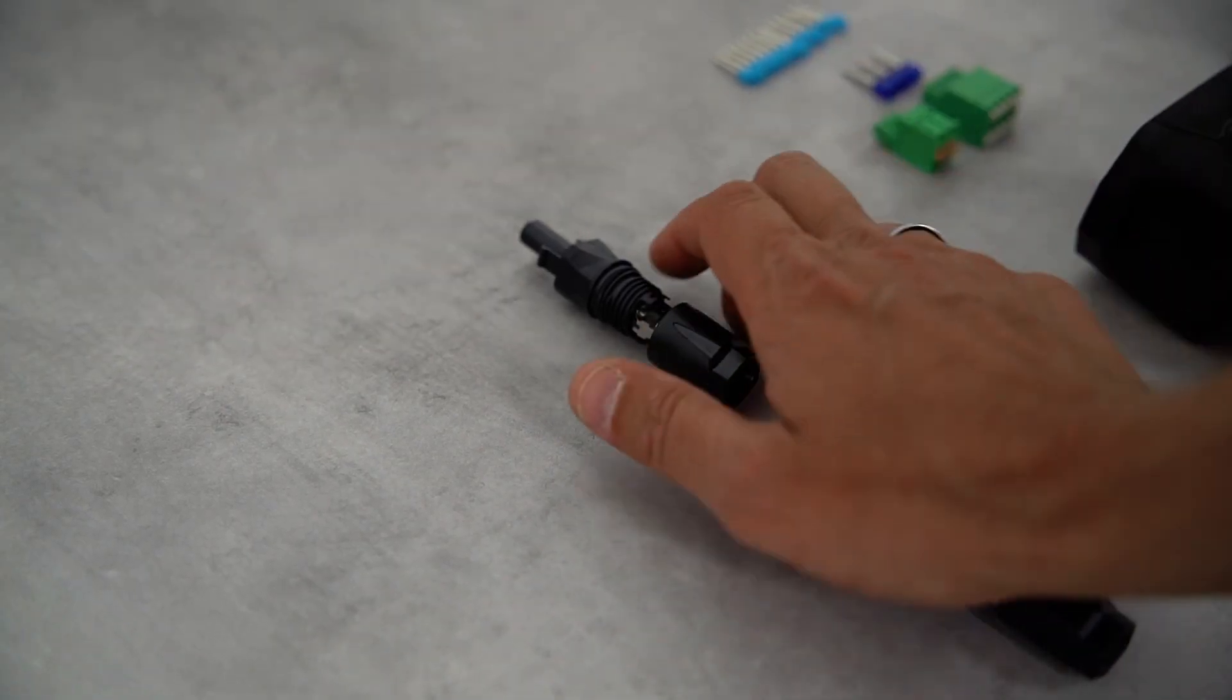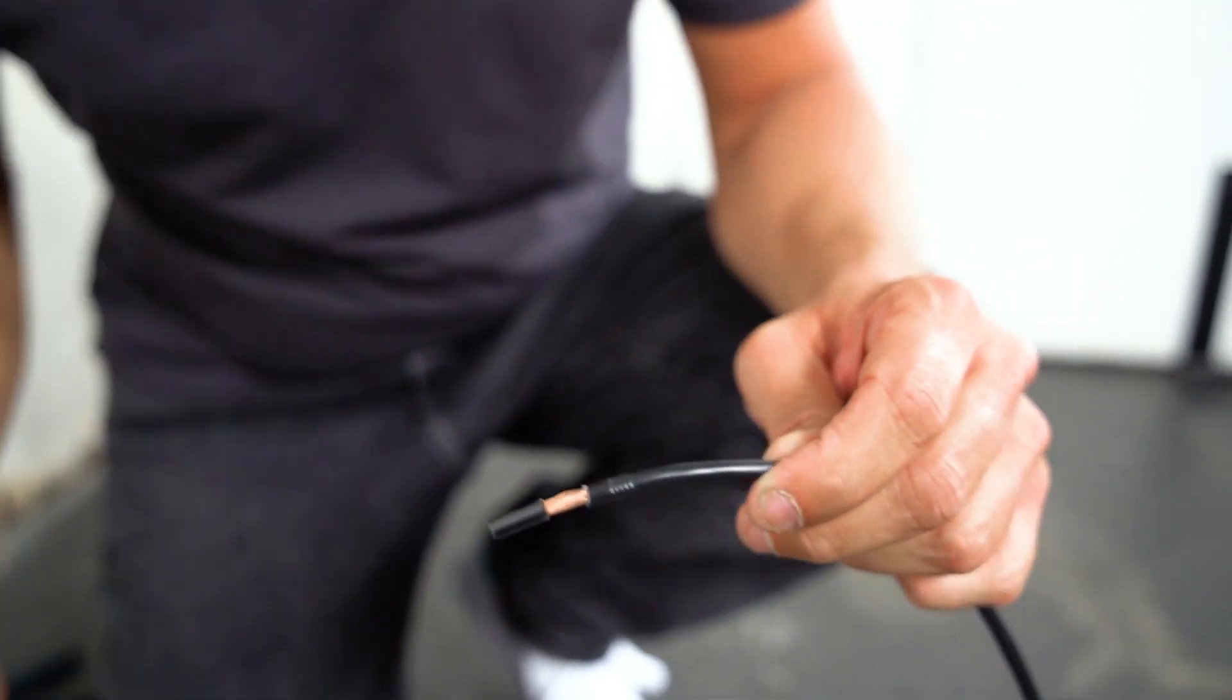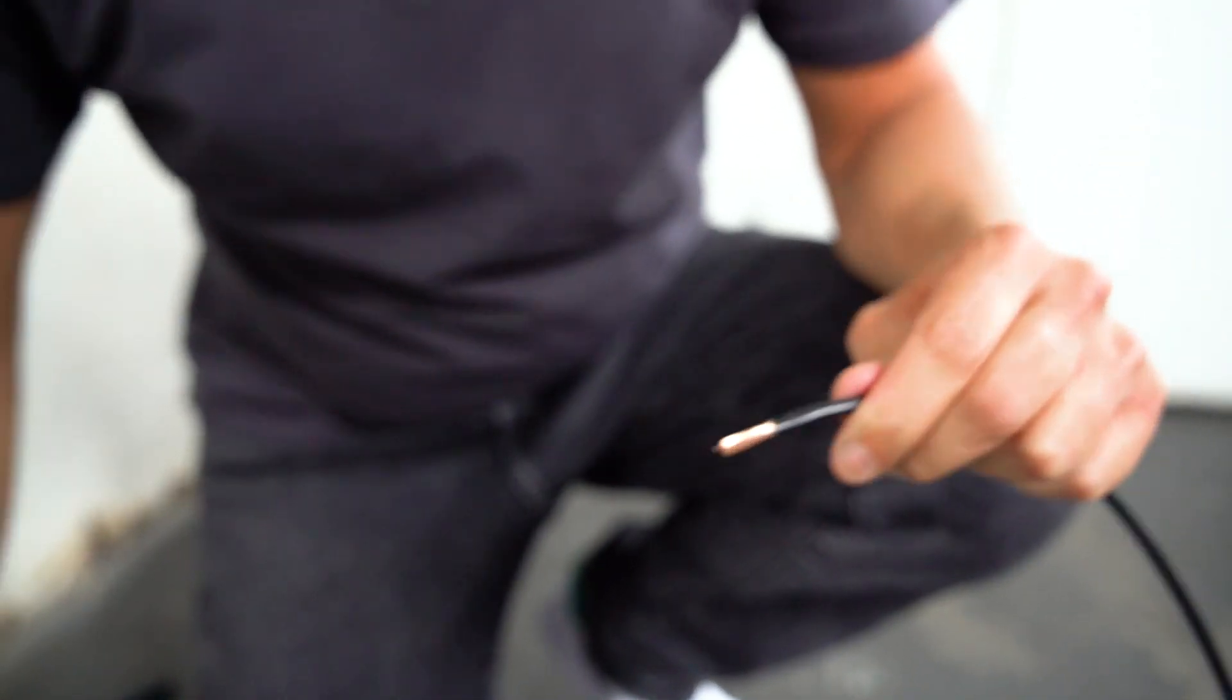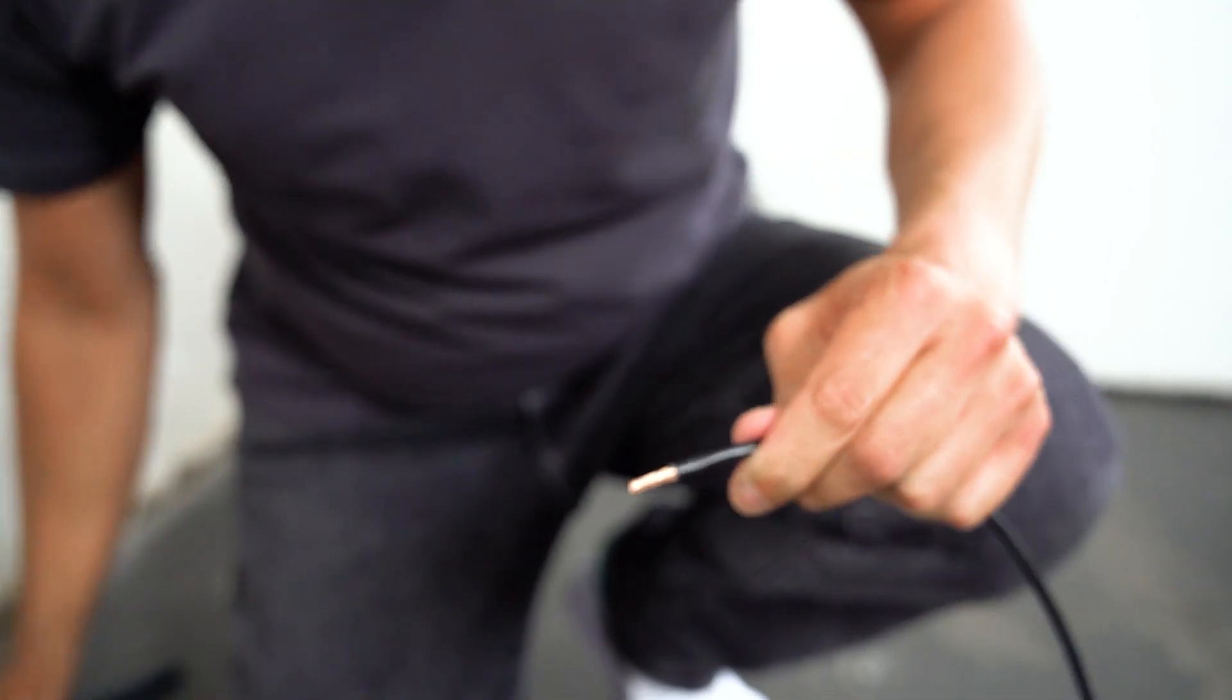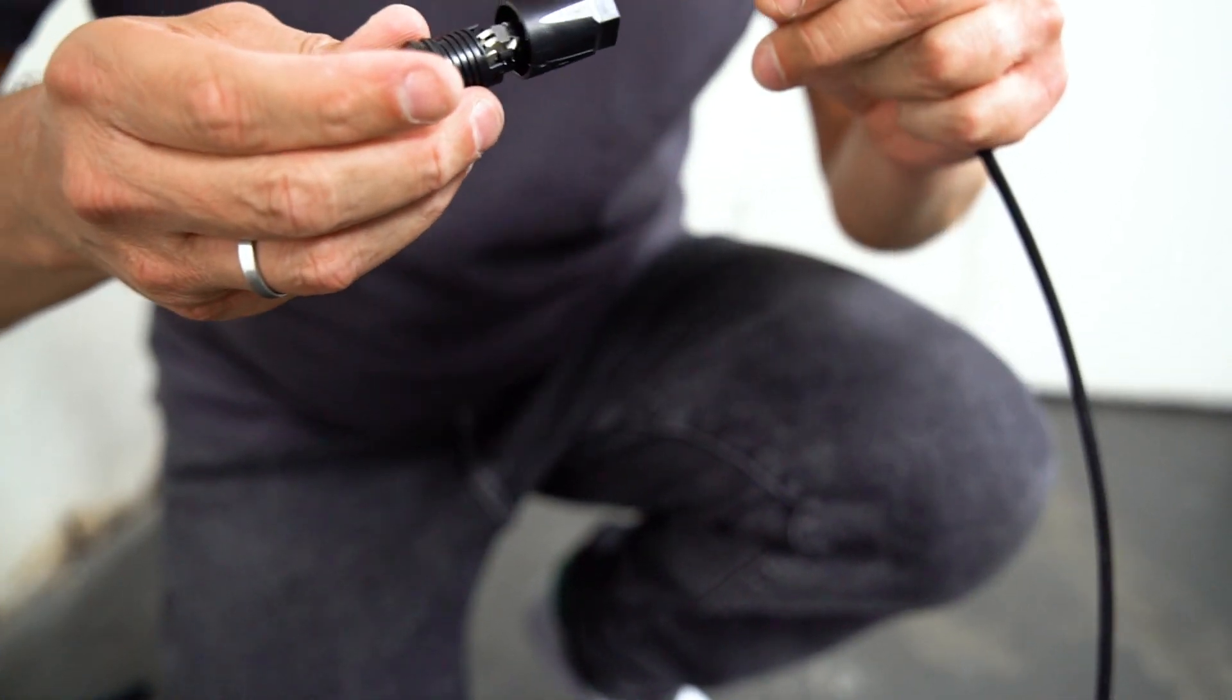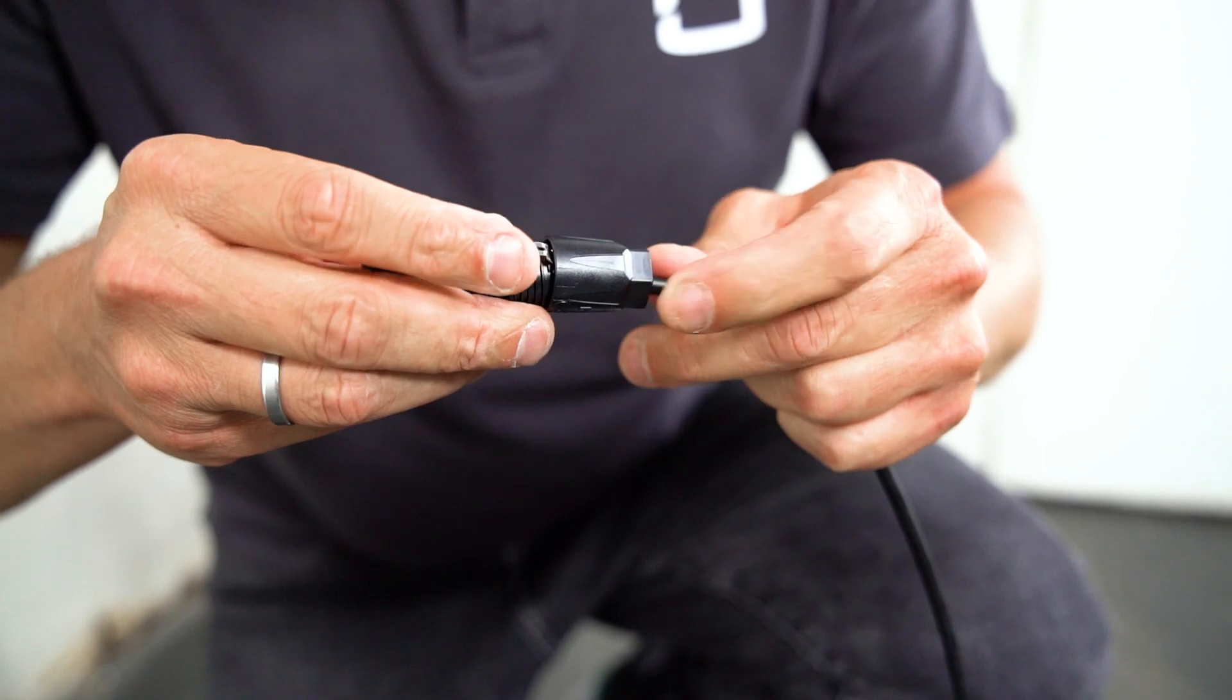In the next step, the battery will be connected to the single-phase hybrid via SunClix connectors. Pay attention to the correct polarity. This is marked on the inverter and the battery. First, insert the cable until resistance is felt.